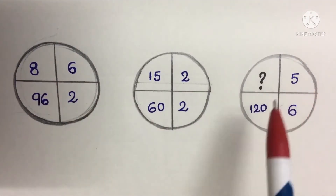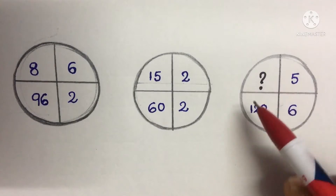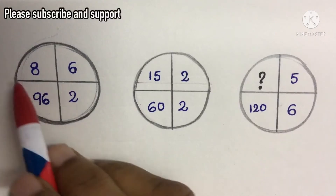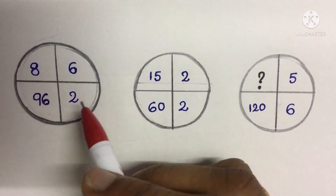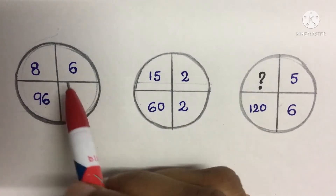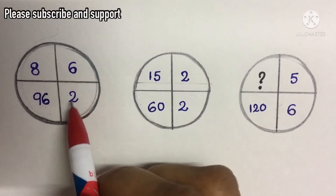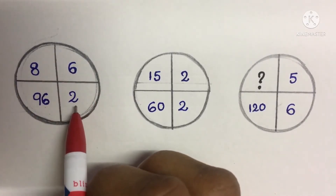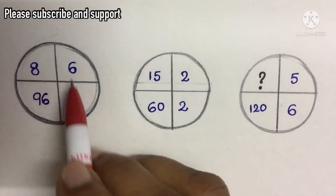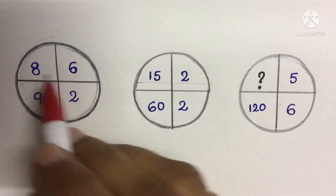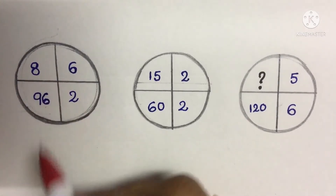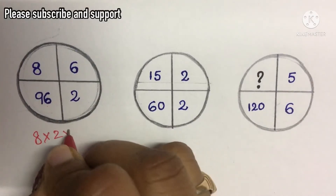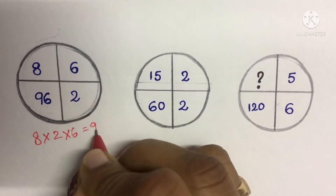In these 3 boxes, we need to find out the missing number. Here we have 8, 6, 2, and 96. The big number is 96, and the three small numbers are 8, 6, 2. Let's try addition: 8 plus 6 is 14, plus 2 is 16 — that doesn't work. So let's try multiplication: 6 × 2 = 12, 12 × 8 = 96. So 8 × 2 × 6 = 96.